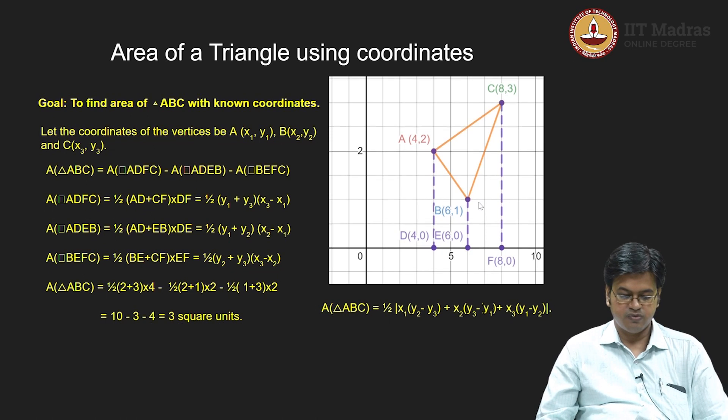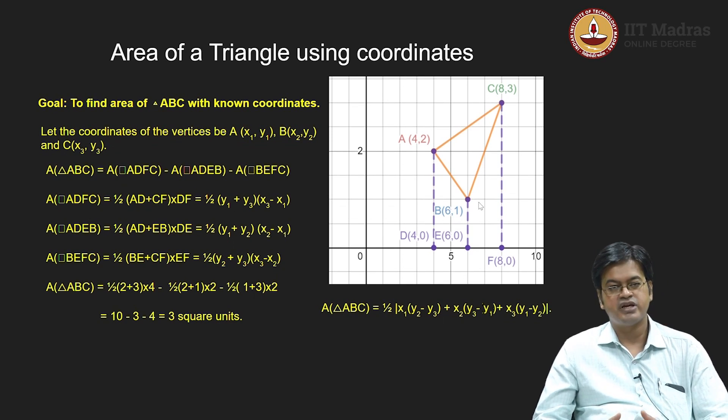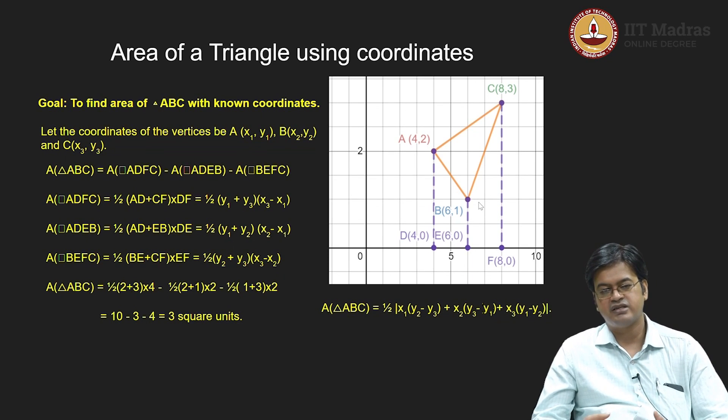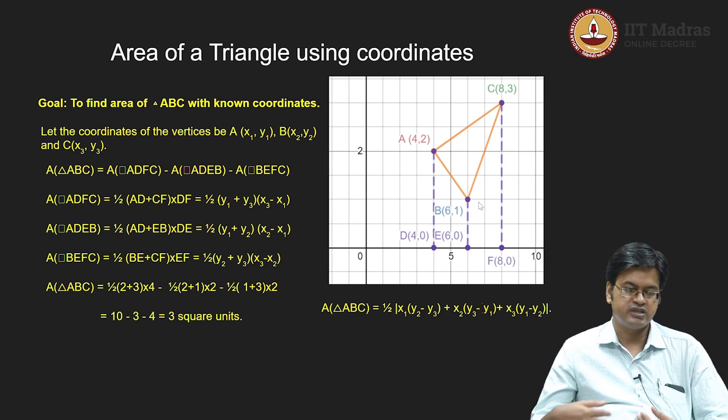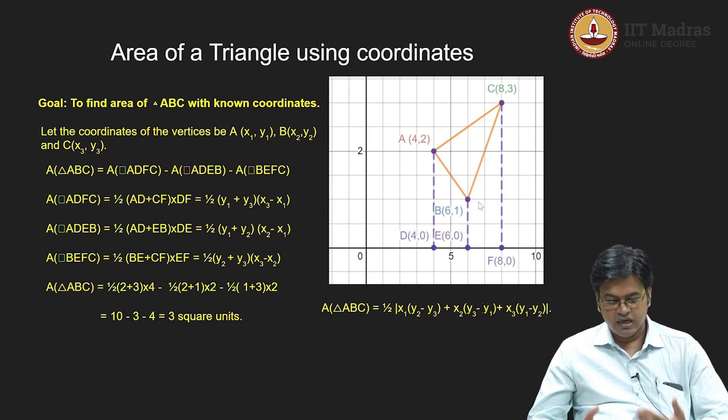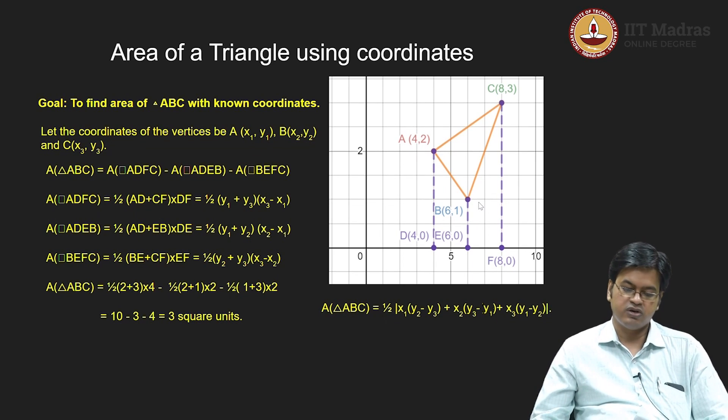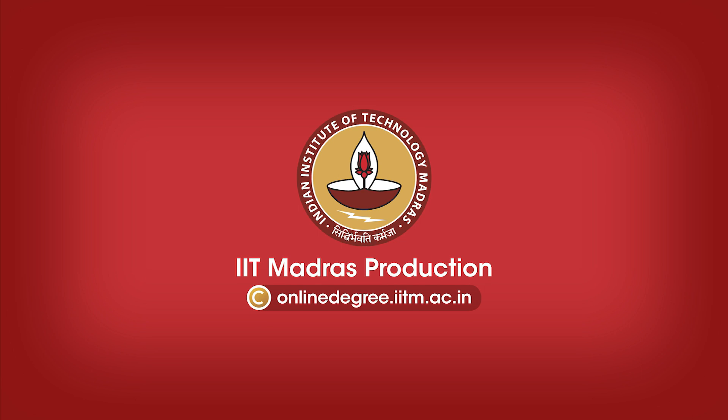So I have considered area of a triangle. Now, what we have seen so far is: given two points, how to find the distance between two points; given three points if they are collinear, we have found how section formula can help us to find their ratios or the coordinates of the middle point. Now, if the points are non-collinear, we have seen how to compute the area of the triangle using the coordinate system.